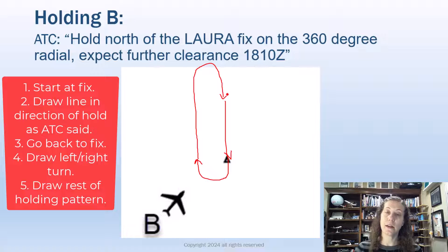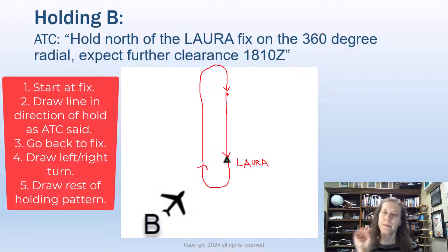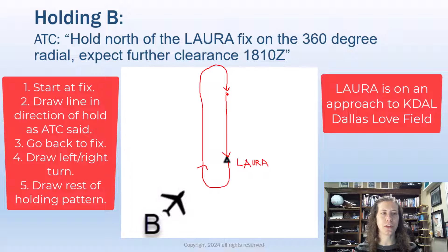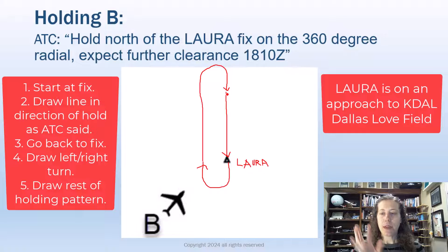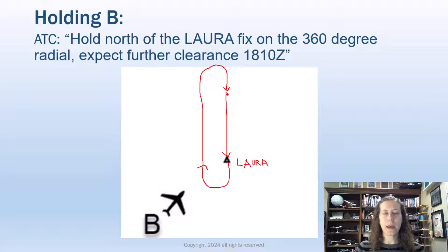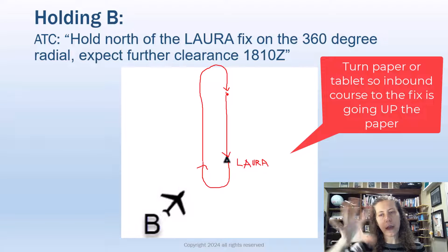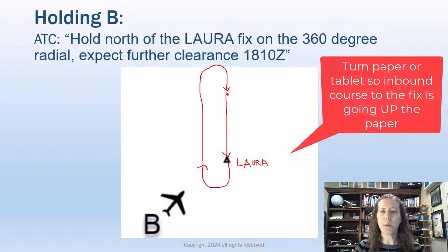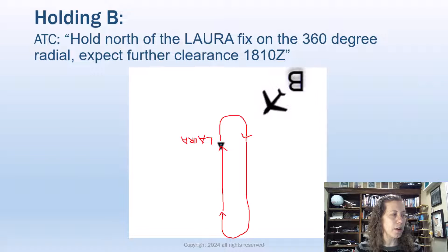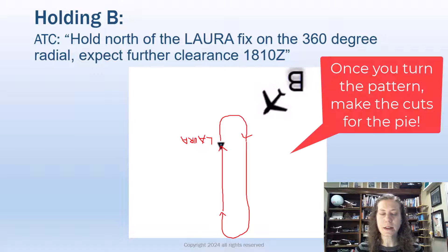And I did get an expect further clearance time, so that's good. So there is my holding pattern labeled Laura. There really is a fix called Laura, by the way. It's in Dallas, actually. So that's my holding pattern. But again, I recommend that we turn the paper around before we start trying to cut the pie. That way we can always cut the pie the same way, and it really helps me with figuring out how to do my entry.